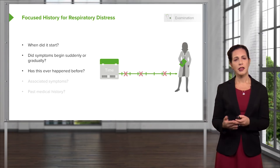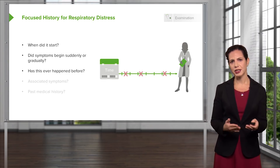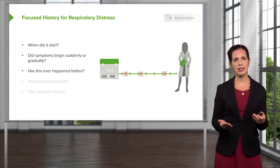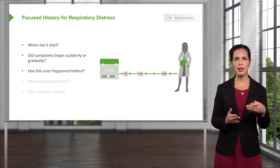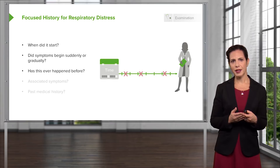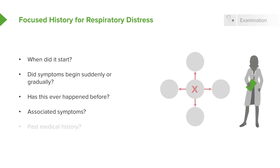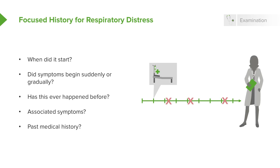Has this ever happened before? Many causes of respiratory distress are recurrent — for example, COPD and asthma cause intermittent exacerbations, whereas a pulmonary embolus might happen only once. Are there associated symptoms? Is the patient having chest pain, leg swelling, fever, or a cough? And what is their past medical history? Do they have obstructive lung disease, are they a smoker, have they had heart attacks, do they have heart failure, are they on diuretic medication? Try to formulate all of this as quickly as possible.